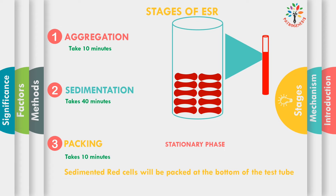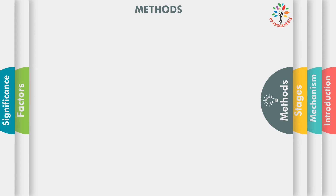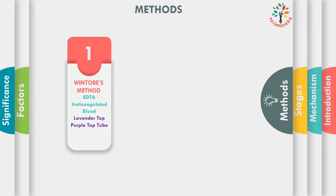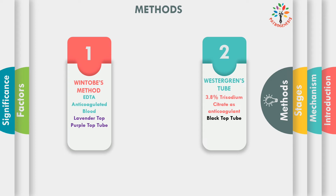Next, I am going to talk about different methods for ESR. The first one is Wintrobe's method and the second one is Westergren method. If you are going to perform ESR by Wintrobe's method, you have to choose EDTA anticoagulated blood. You are going to pick up a lavender top tube, which is also called a purple top tube.